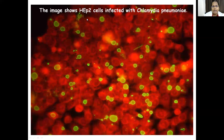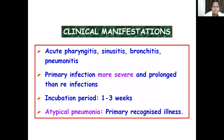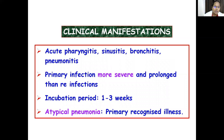This is Chlamydia pneumoniae, shown growing in HEp-2 cells. The clinical spectrum includes acute pharyngitis, sinusitis, bronchitis, and pneumonitis, with onset including asthma. The incubation period is 1 to 3 weeks. Primary infection occurs in young children and reinfection is most common. Primary infection is more severe and prolonged than reinfection.